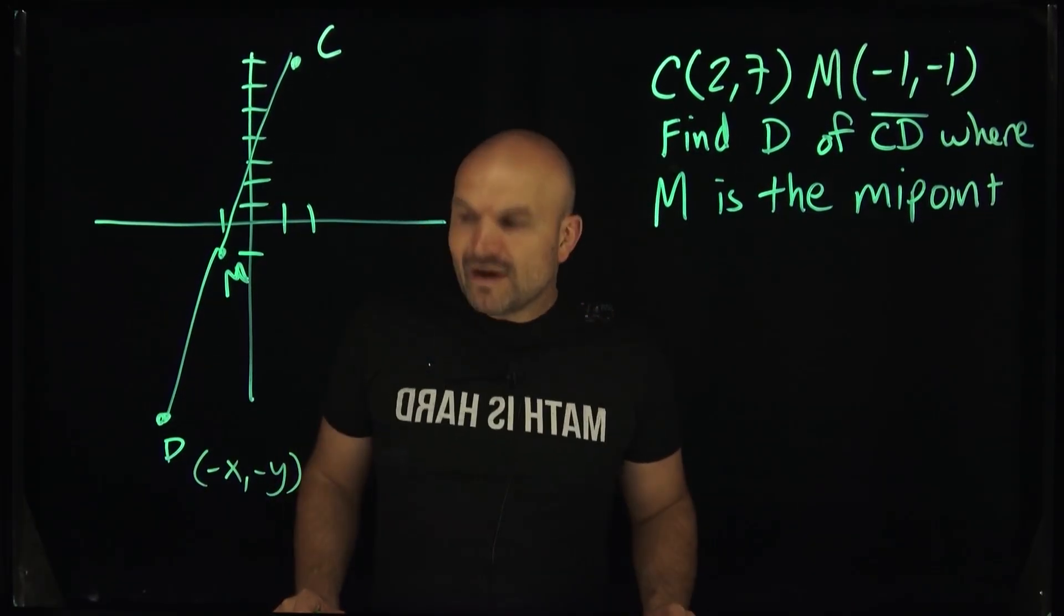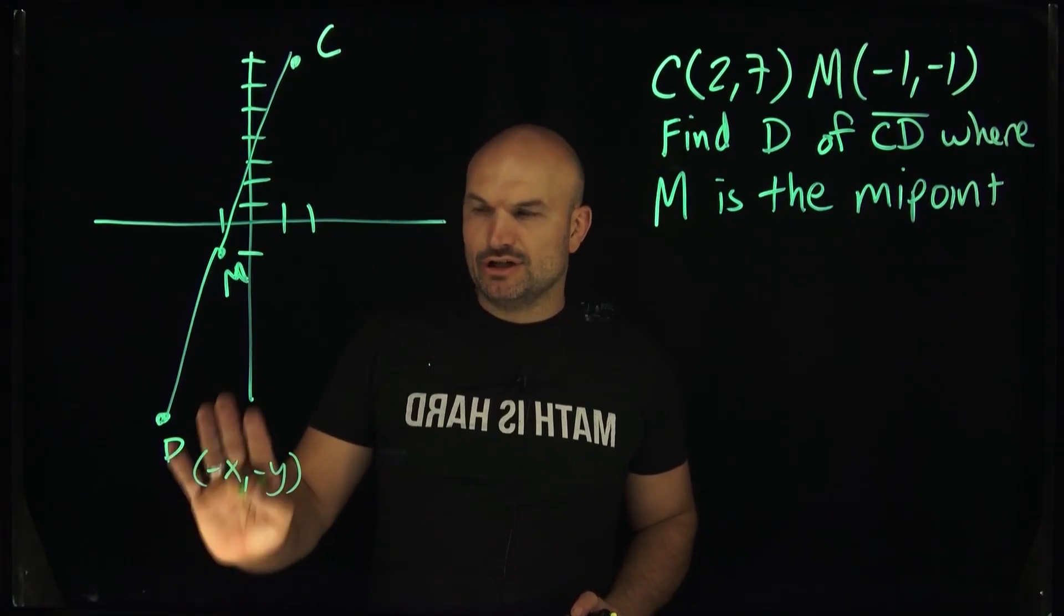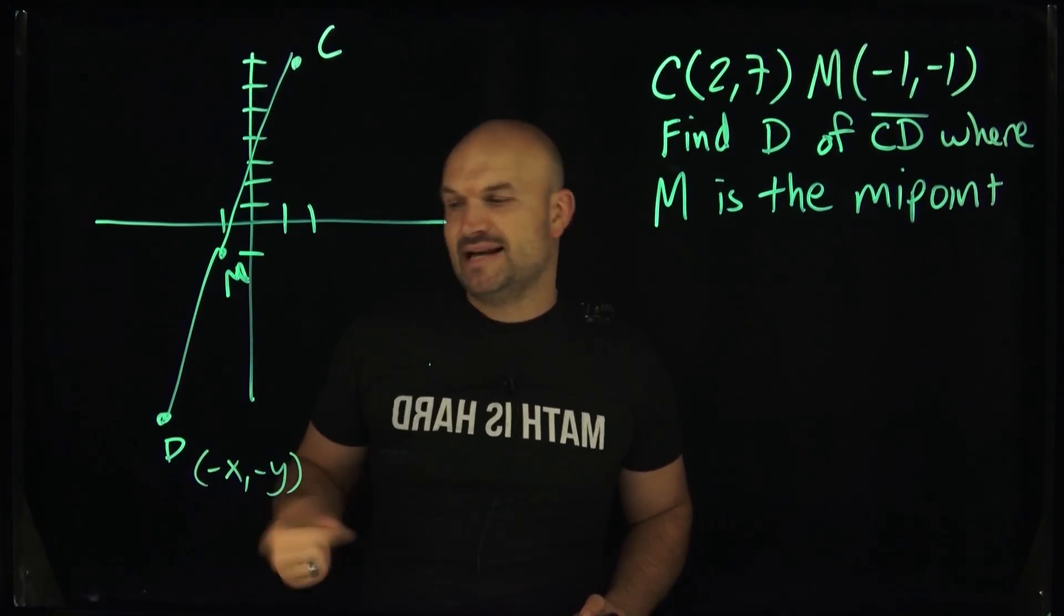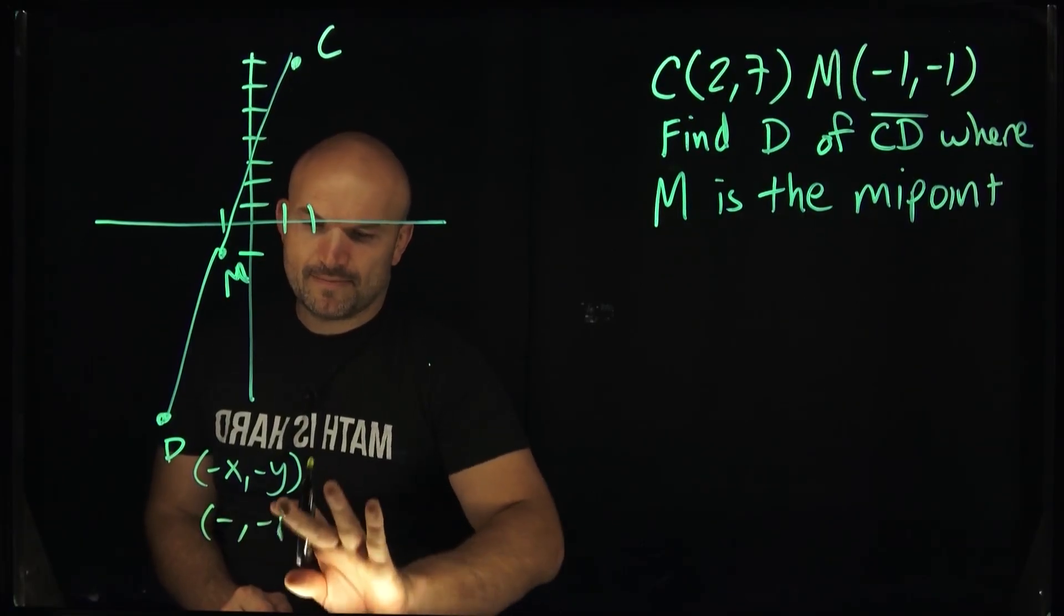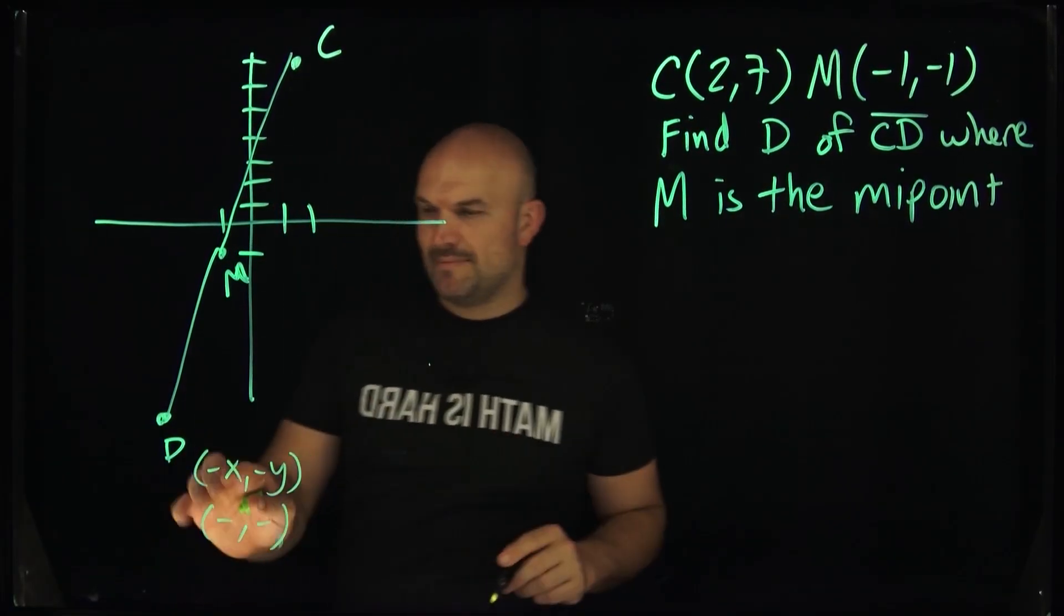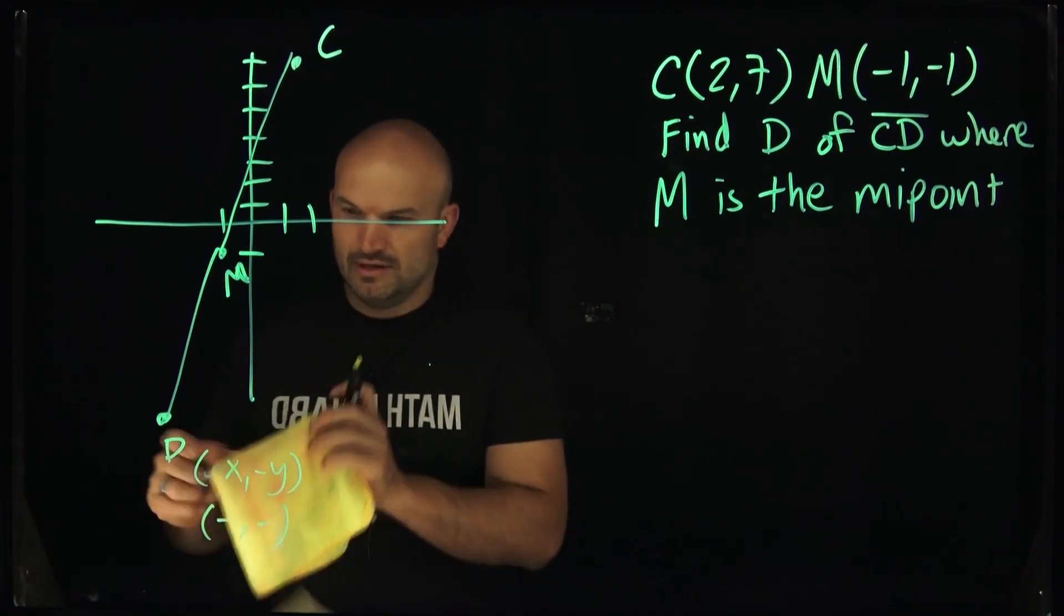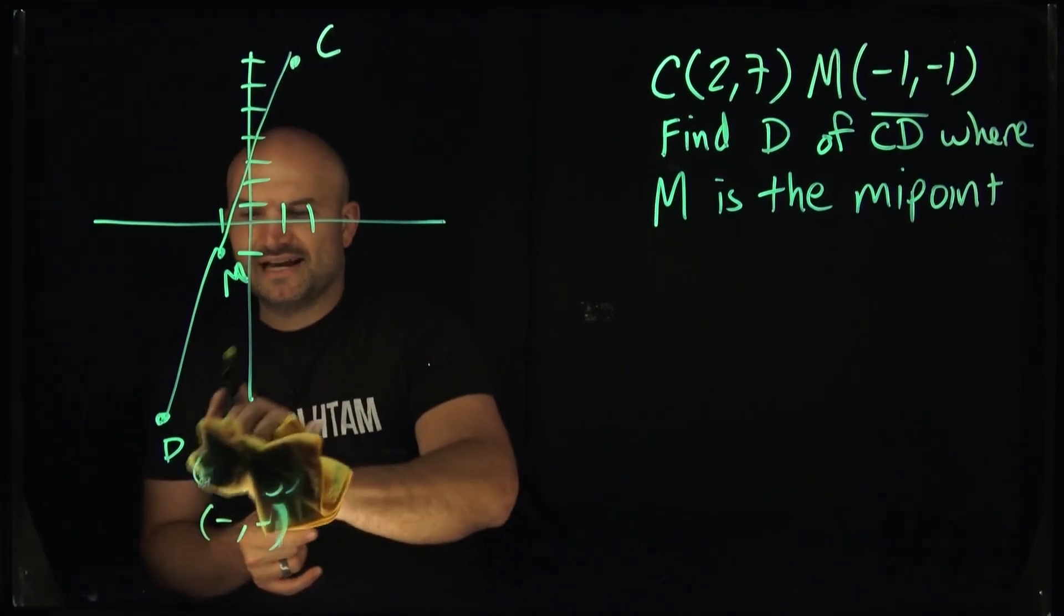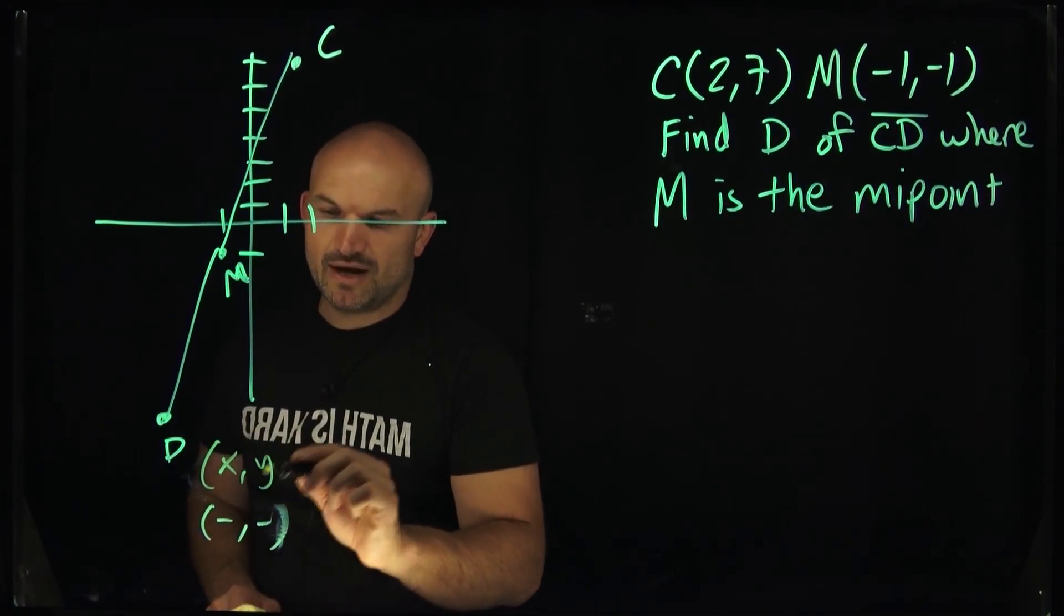All right, so what do we know about these values? Now, I don't want to confuse you here with these negative X and negative Y. We're still going to treat this. We just know these values need to be negative. And actually, let me just kind of maybe do this. We know the values are going to be negative. So I'm just going to kind of do that. Because I want you to understand this, that I don't know what these values are. So I don't want to put the negatives here, because for the formula that we're going to use, that's not going to be helpful. So I'm just going to use an X Y.